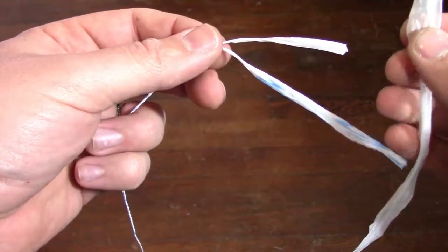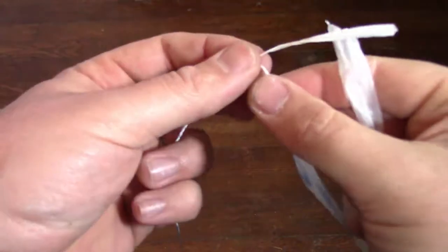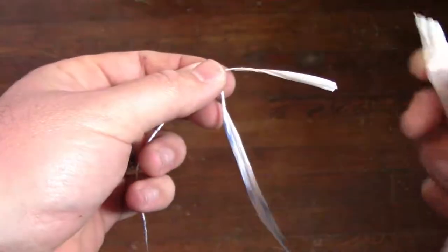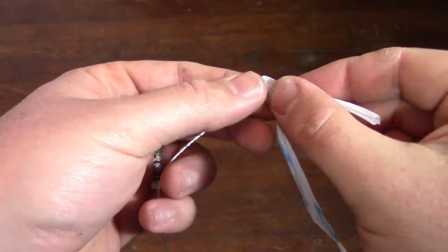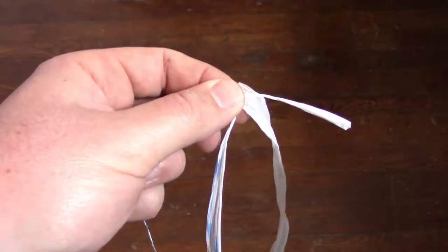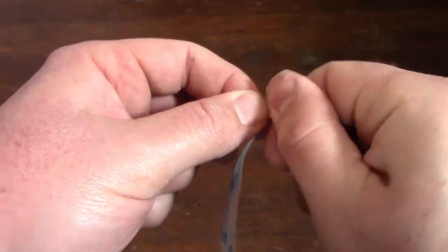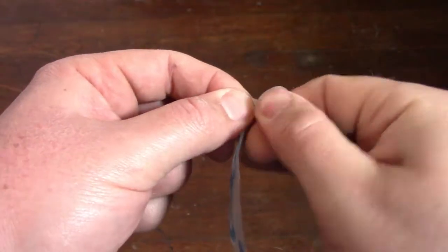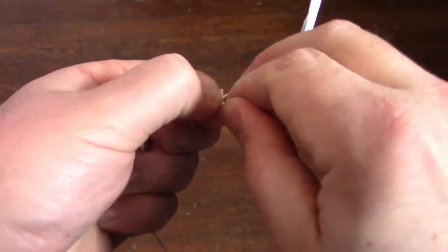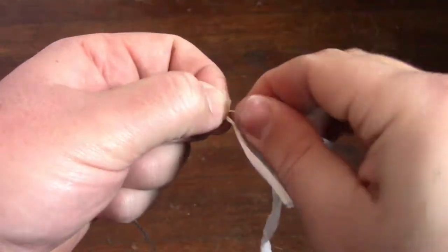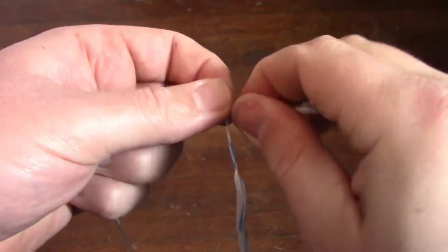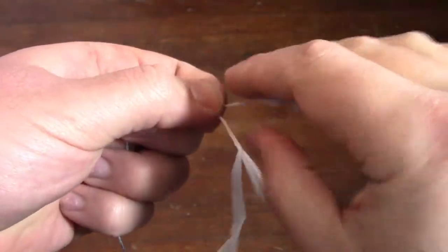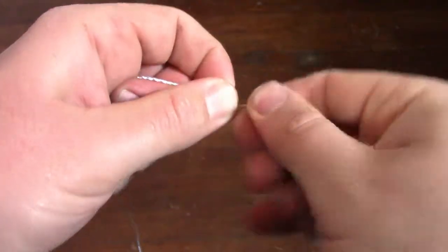All right, so we're starting to run out of material here. Now what do we do? Well, keeping my pinch, I'm going to take another piece of material and I'm going to bring it up into that pinch. And I'm just going to twist that into my top piece and keep going just like we were before. So twist it right in, keep working as usual.